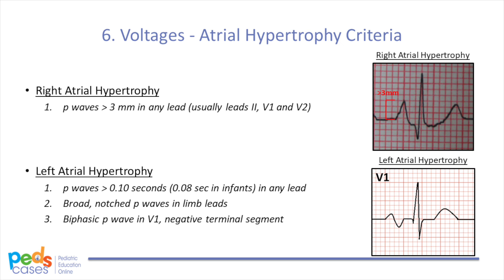Left atrial hypertrophy is characterized by prolonged P-waves, which are 0.10 seconds or longer in any lead, or longer than 0.08 seconds in infants. Thinking about an impulse traveling from the SA node to the AV node, if the left atrium is enlarged, an impulse going through both atria will take longer to reach the AV node, resulting in a longer P-wave. Broad notched P-waves in the limb leads and a biphasic P-wave in V1 with a dominant negative terminal segment may raise suspicion for left atrial hypertrophy. Biatrial hypertrophy is characterized by a combination of increased amplitude and duration of P-waves.